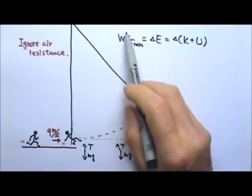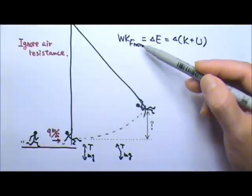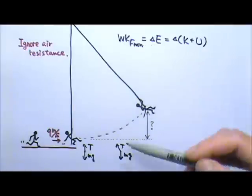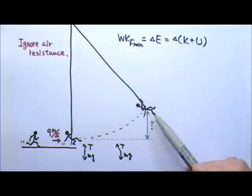To define the work done by non-conservative force, let's see. During the swing, there are two forces acting on Tarzan, mg and the tension. mg is a conservative force, so the only non-conservative force is the tension. How much work does tension do during the swing?